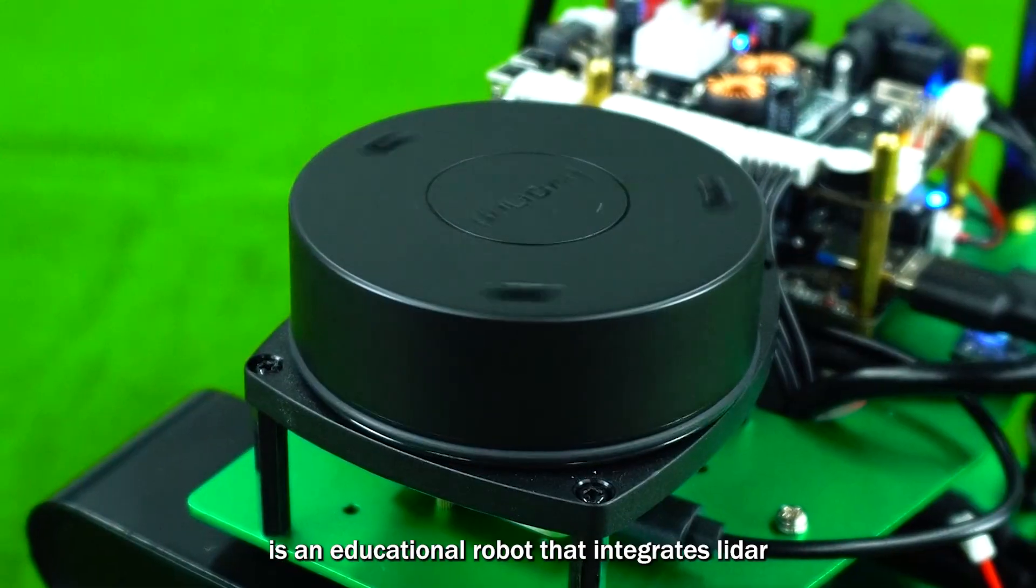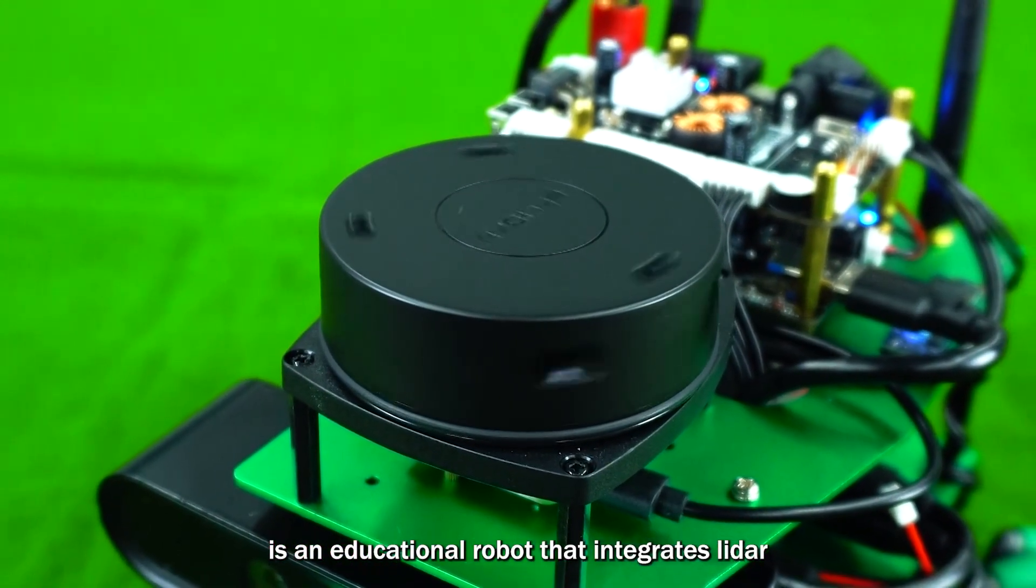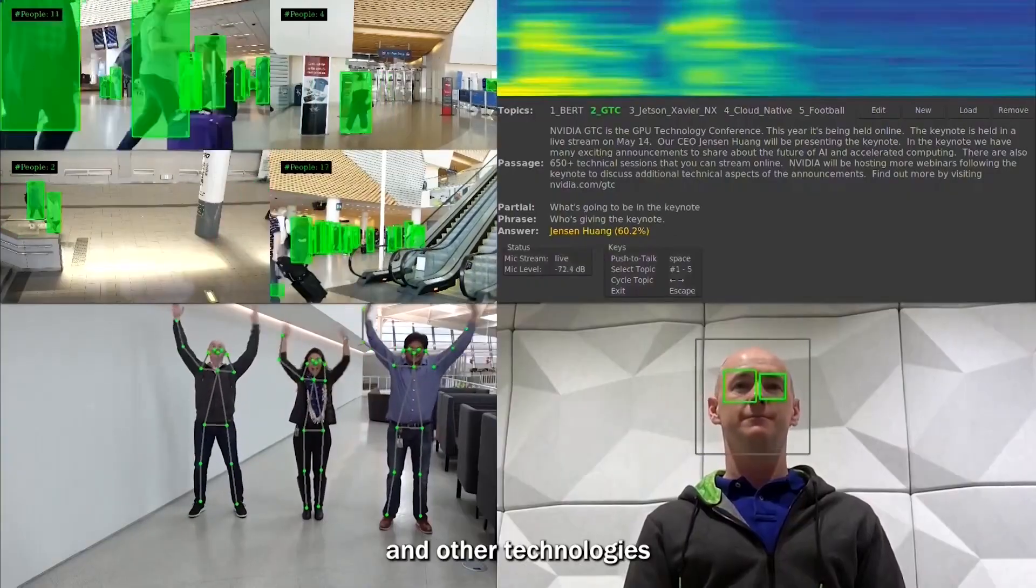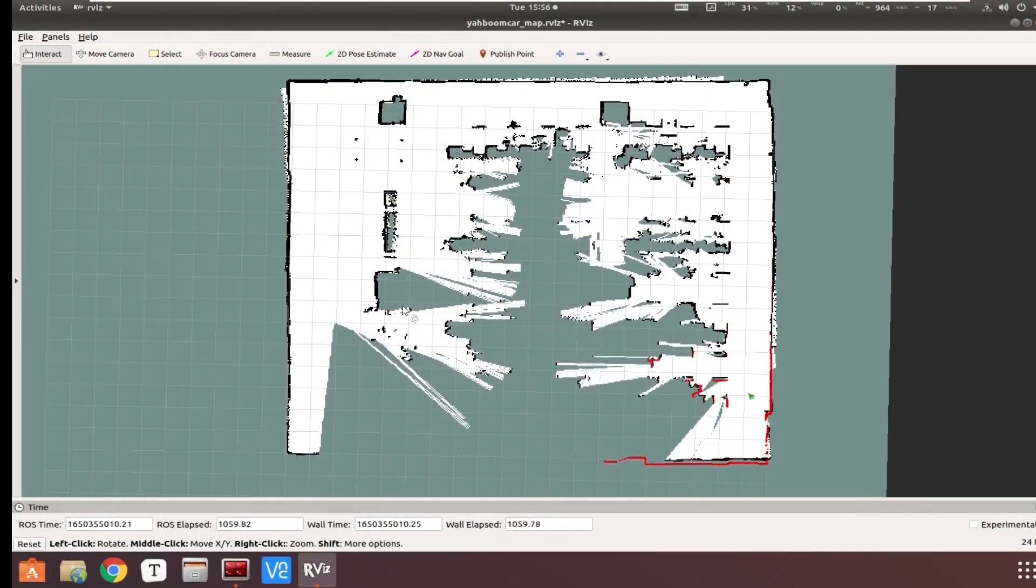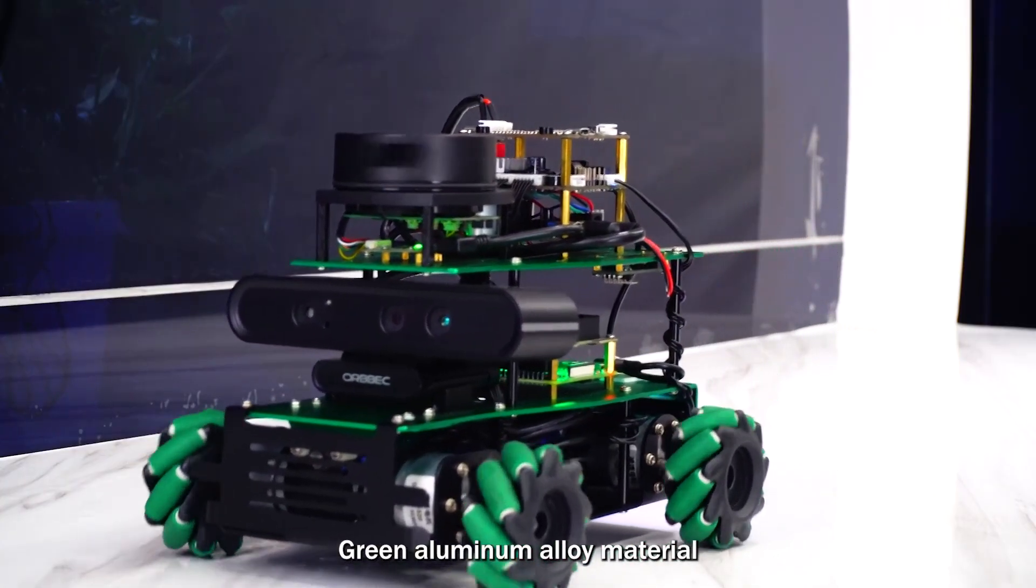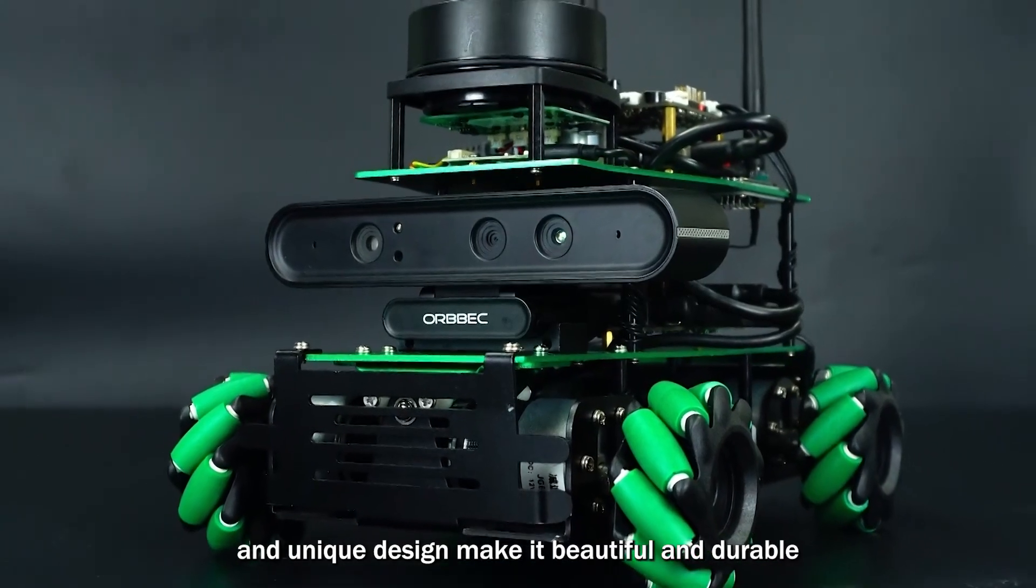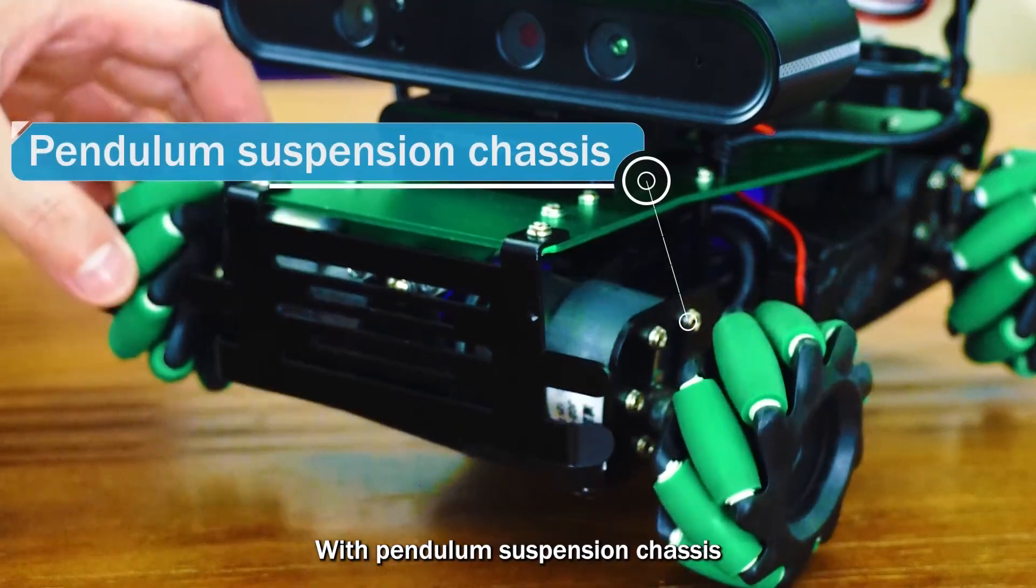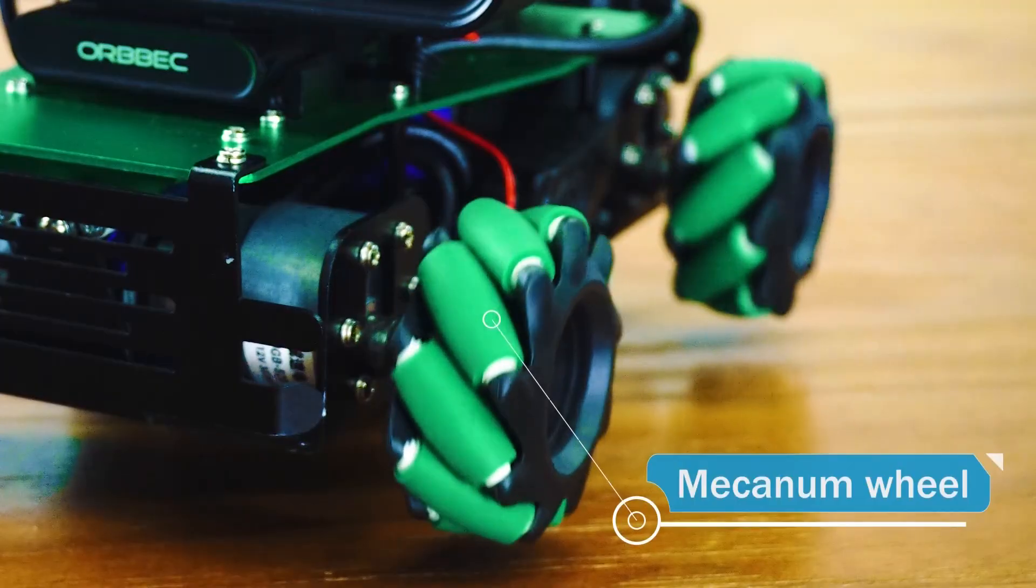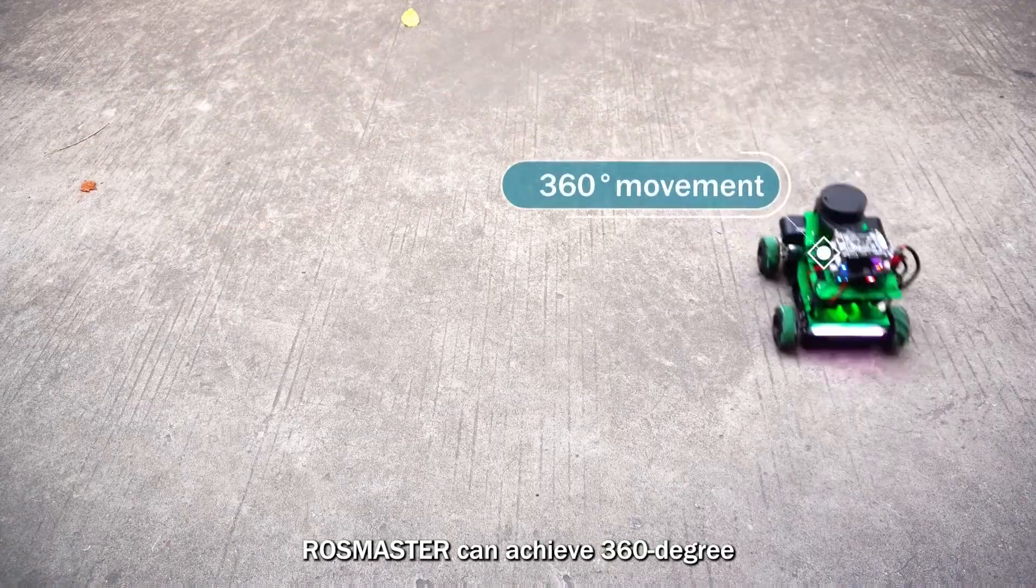Rosmaster X3 is an educational robot that integrates lidar, depth camera, AI deep learning, and other technologies. Green aluminum alloy material and unique design make it beautiful and durable. With pendulum suspension chassis and mecanum wheels, Rosmaster can achieve 360-degree omnidirectional movement indoors and outdoors.